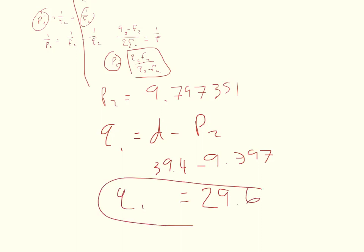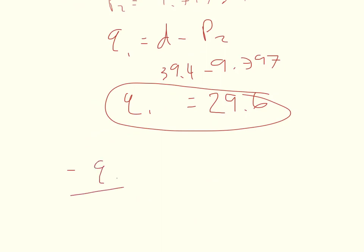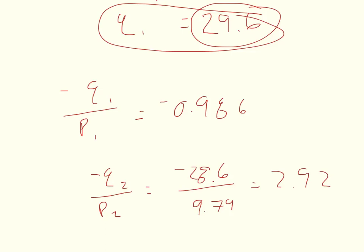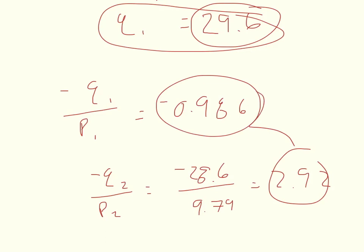We have Q1 = 29.6 cm, so M1 = -Q1/P1 = -29.6/30 = -0.98675. And M2 = -Q2/P2 = -(-28.6)/9.79 = 2.920052. Multiplying M1 × M2 gives the total magnification of the whole system.